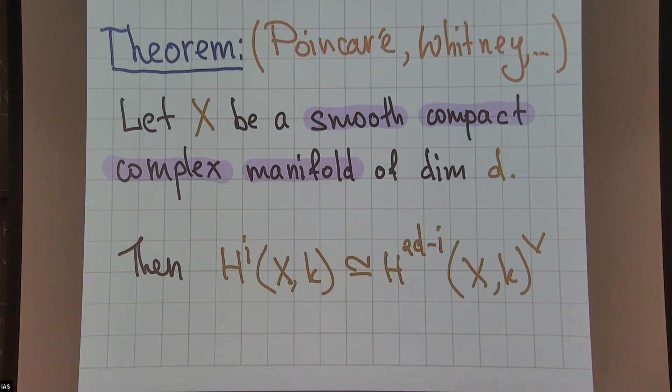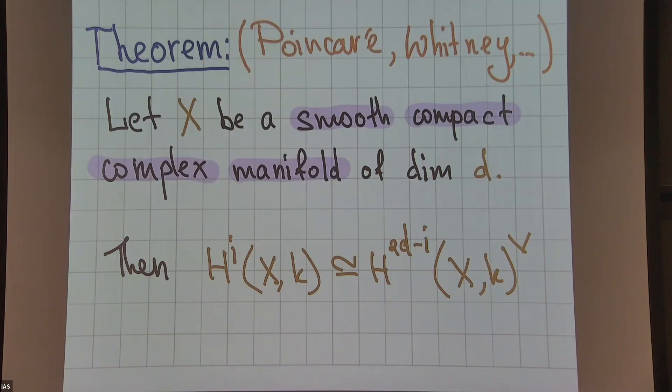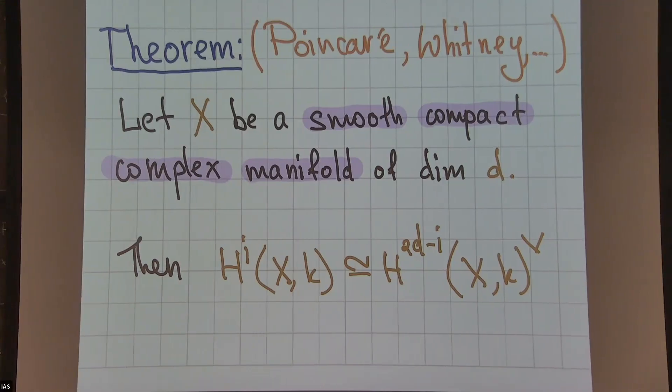This result is quite strong in two ways. First, it doesn't have many assumptions on X - it's like any smooth and compact complex manifold. The second thing is that at least one of the assumptions you put (smooth) is a local condition, and the result is global. So we get some global knowledge of your topology on X from some local data.